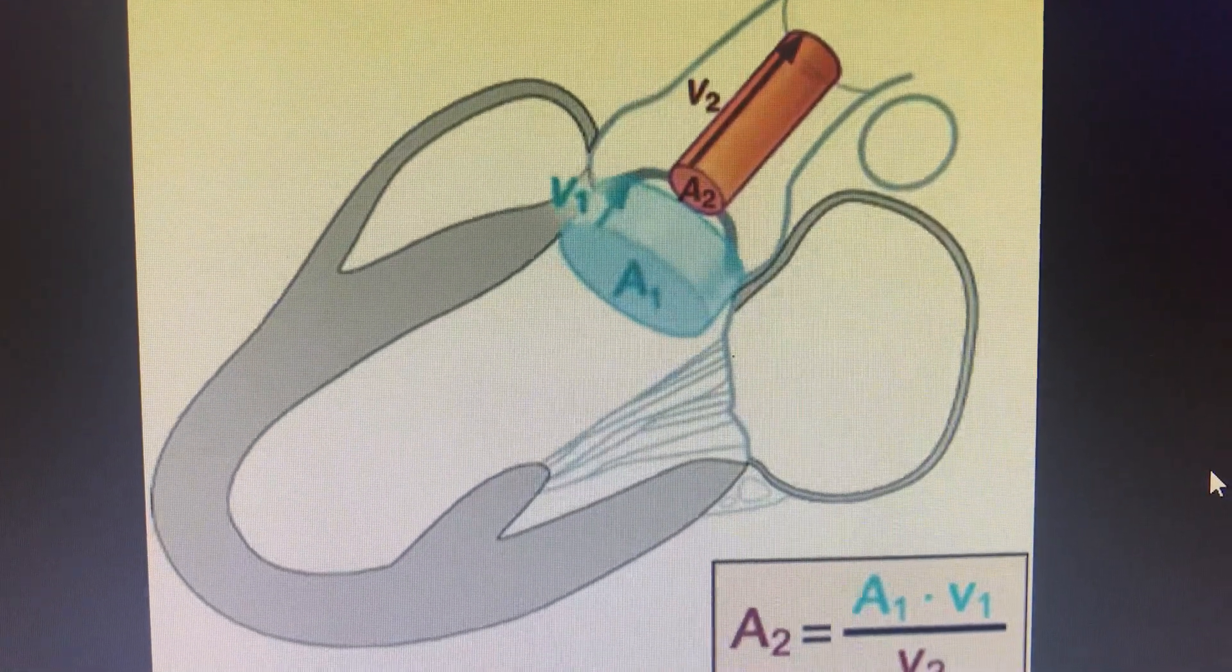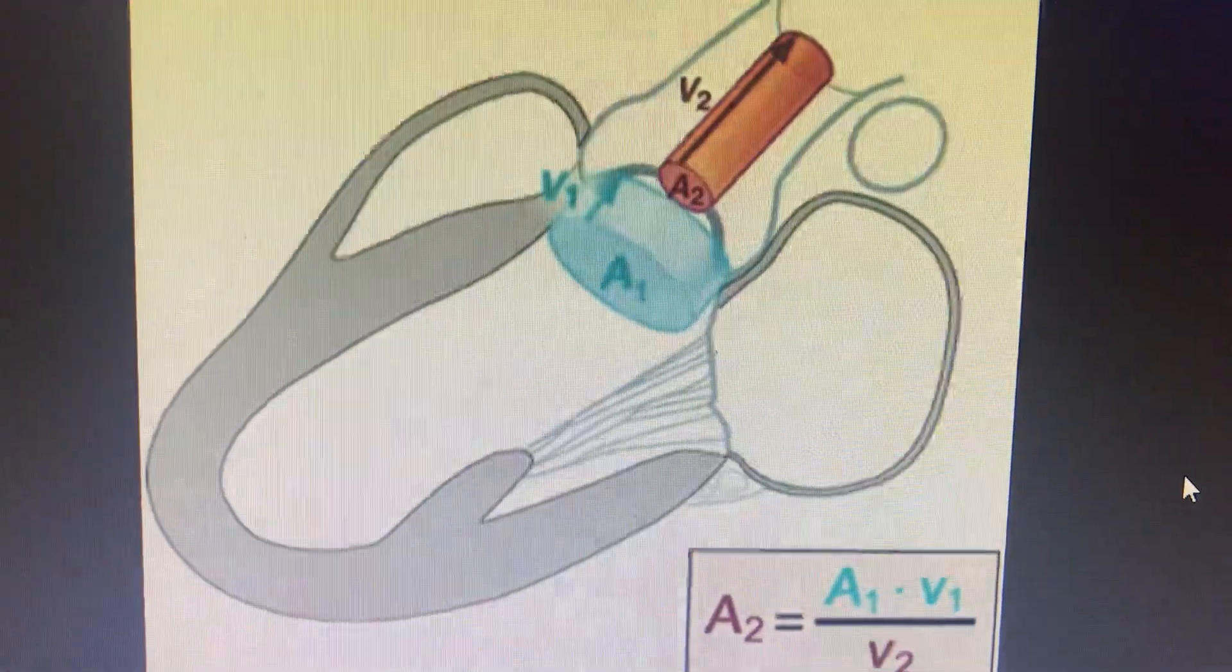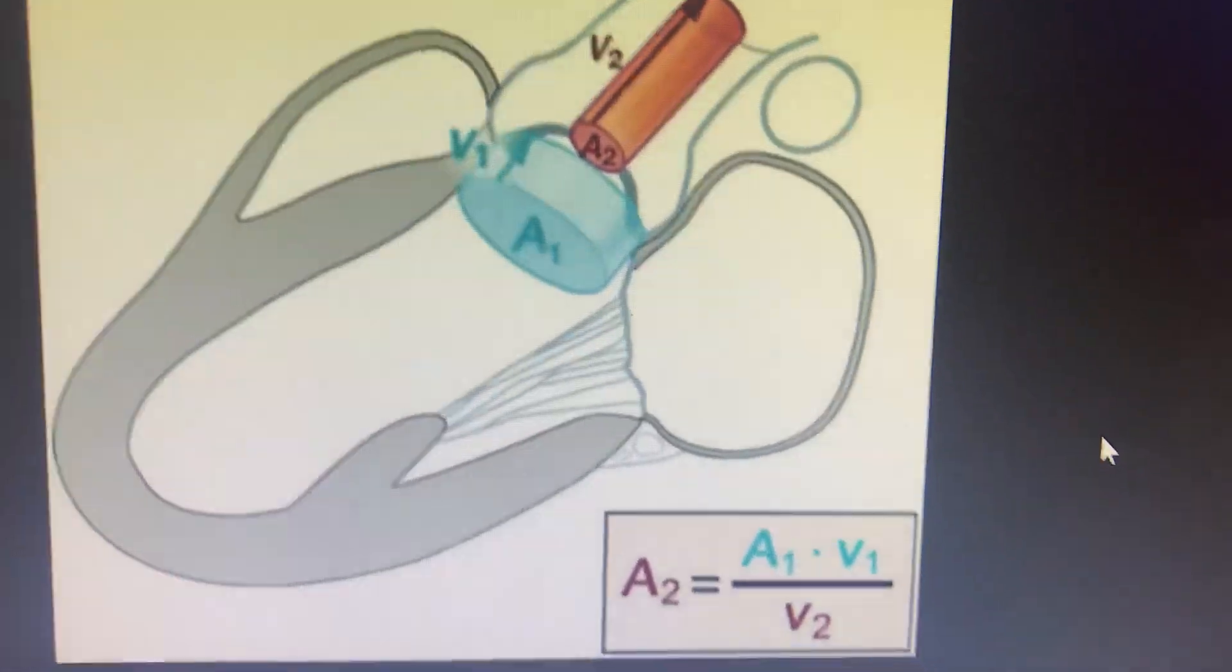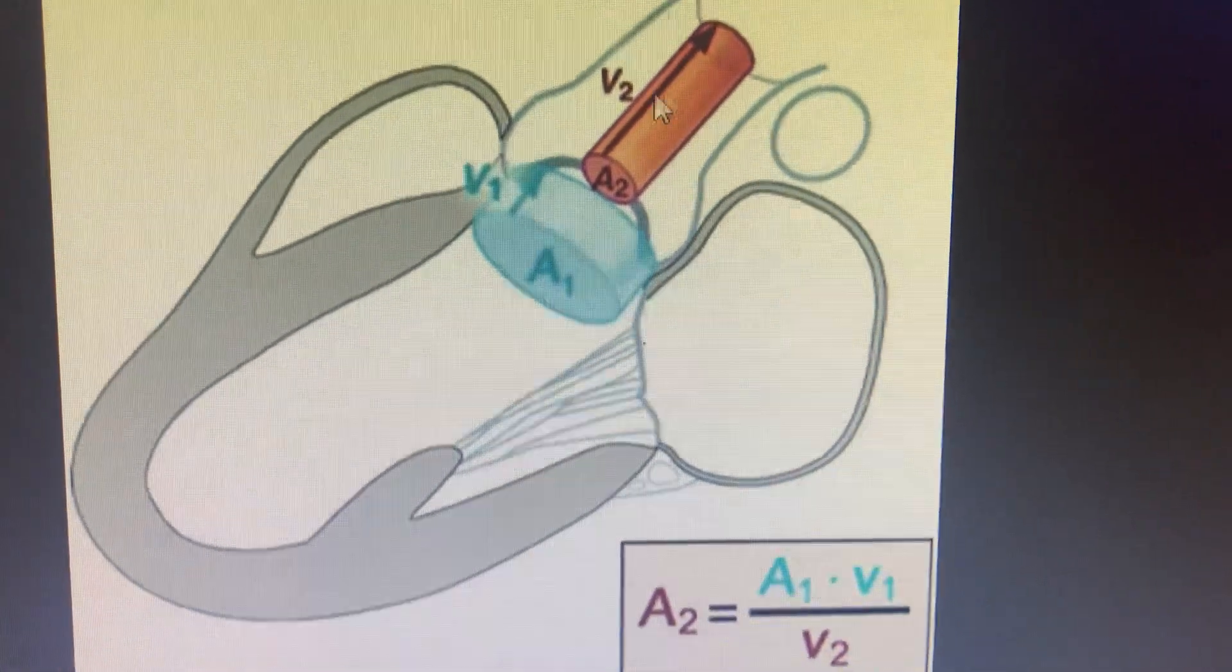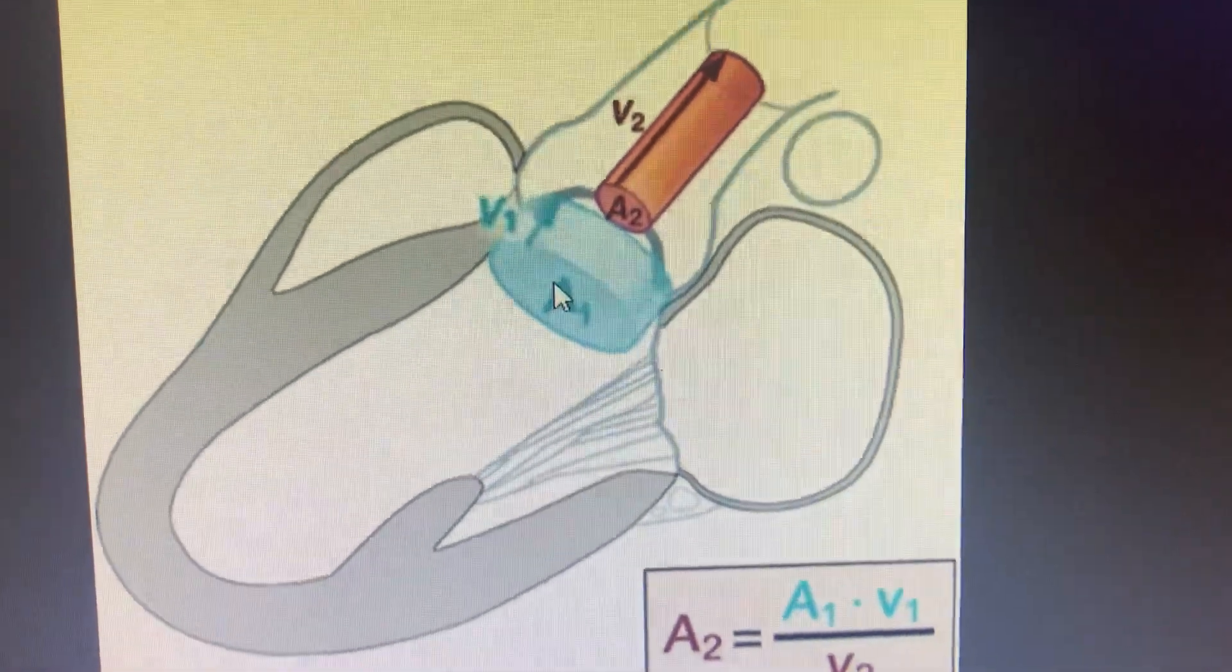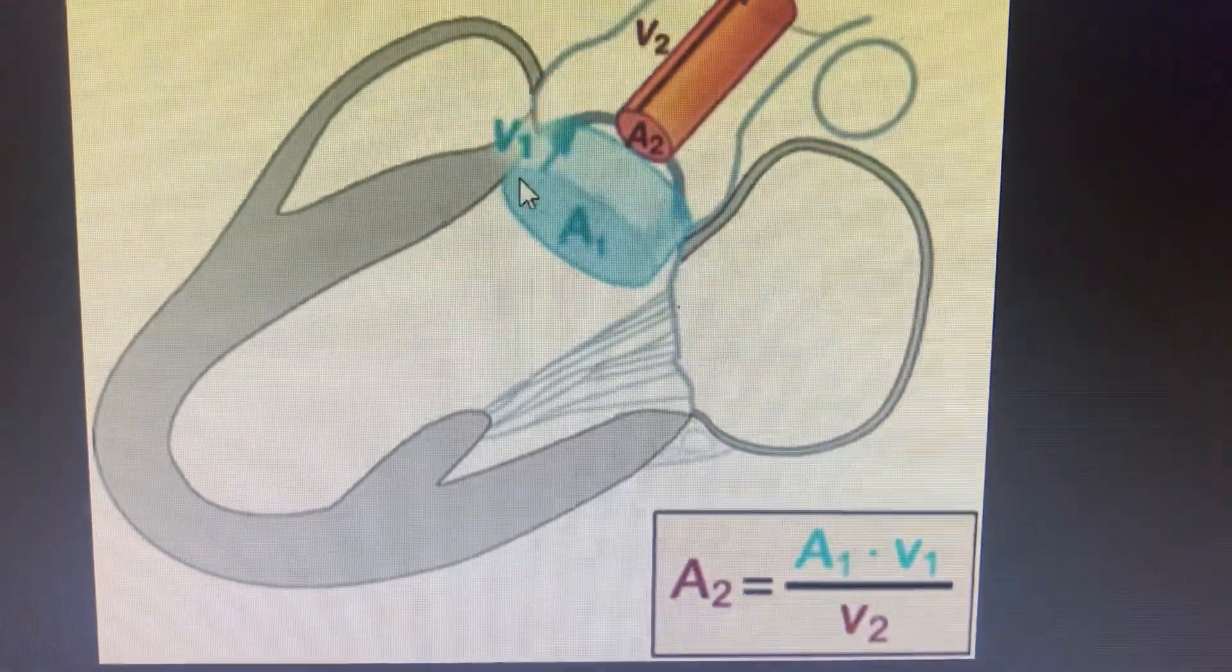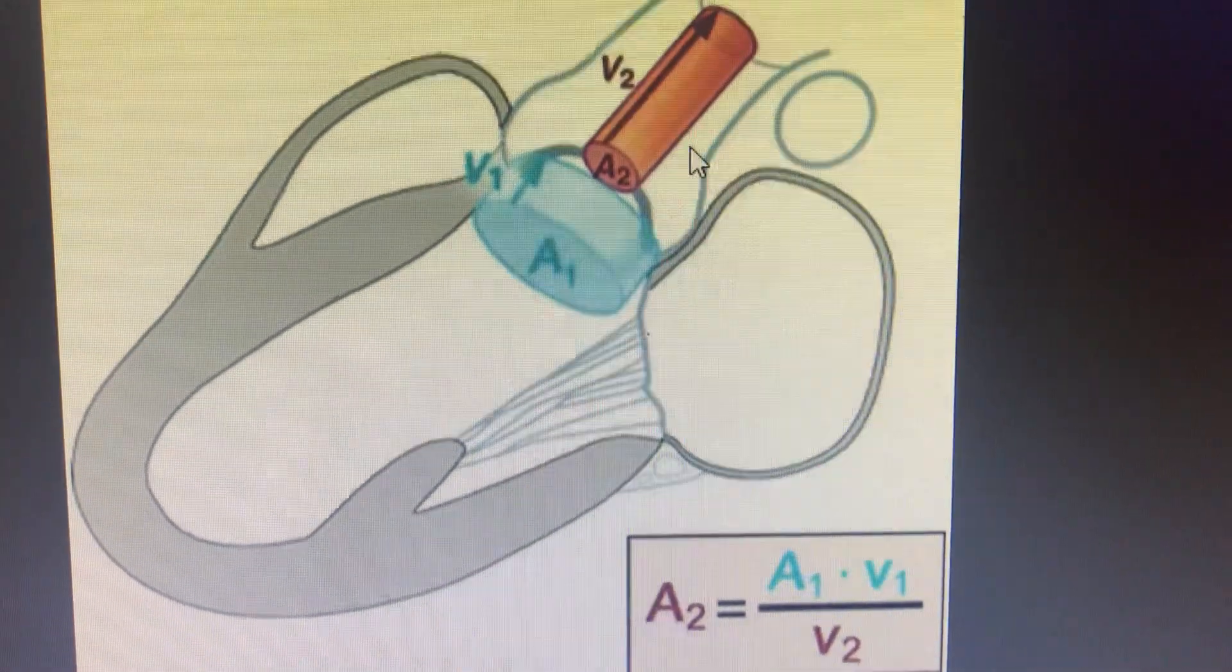The actual aortic valve area is calculated on the principle of the continuity equation. The continuity equation runs on the principle that wherever there is an obstruction, the velocity-area integral distal to the obstruction is equal to the velocity-area integral proximal to the obstruction. So velocity times area equals velocity times area distal at the obstruction.